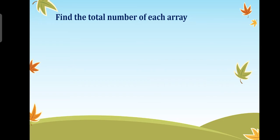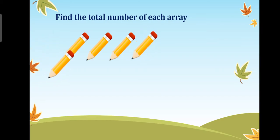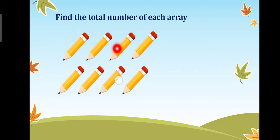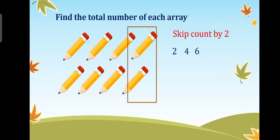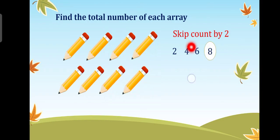Now we need to find the total number of each array. The pencils are arranged in an array. In each row we have four pencils: one, two, three, four. And the other row also has four. By columns, we have four columns. In each column we have two pencils, so we skip count by two: two, four, six, eight — skip counting by two, four times, because we have four columns.